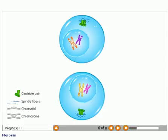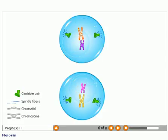The centrioles replicate and move apart. The chromatid pairs align at the center.